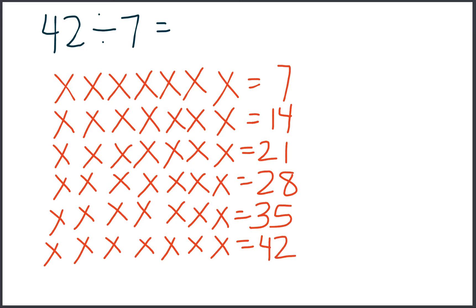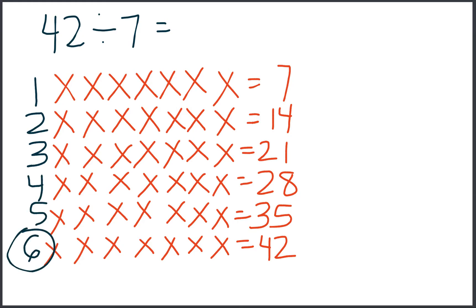So in order to find our quotient, we are going to count how many rows we drew. 1, 2, 3, 4, 5, 6. So 42 divided by 7 gives us a quotient of 6.